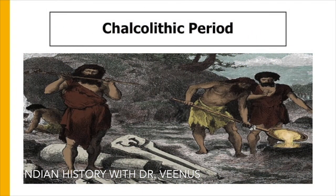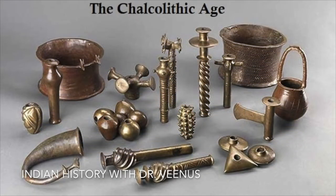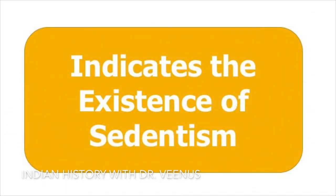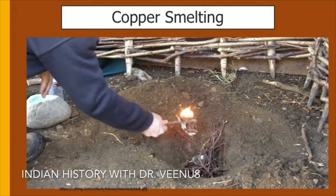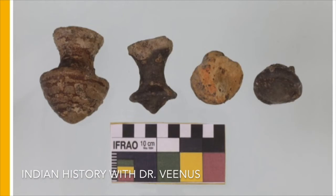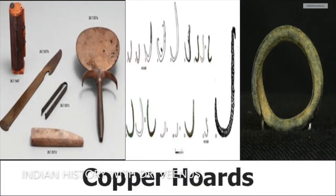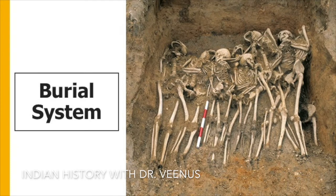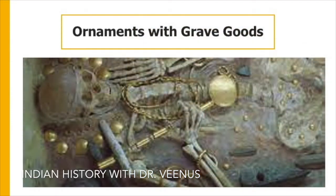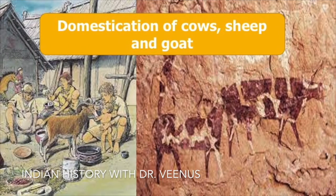The Chalcolithic Culture, dated 4000 to 1300 BC, is marked by locally available copper, which indicated the existence of sedentism. Copper smelting was also found to be practiced during this period. This conclusion has been arrived at from traces of copper found on terracotta cubicles and the presence of broken needles, copper beads, sickles, fish hooks, wire and rings. In the burial system, sometimes more than one person was buried together, and ornaments were also found along with grave goods. Discoveries reveal that there was also practice of agriculture and domestication of cows, sheep and goat.